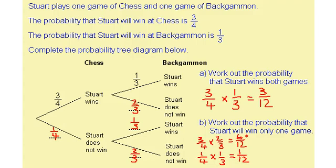Because it's this or this, I need to add them. Six twelfths plus one twelfth is seven twelfths. This is my final answer.